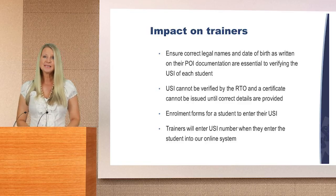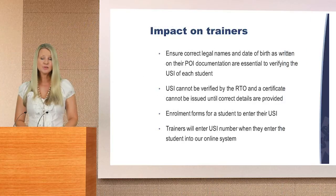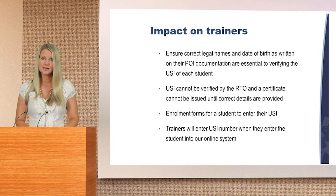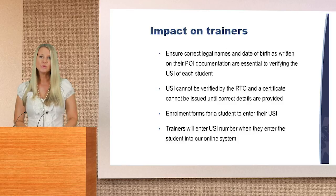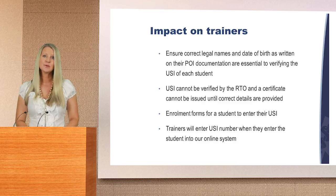The requirement to ensure correct legal names as written on their proof of identity documentation and date of birth are provided on enrolment forms will become essential to verifying the USI of each student. If any one of those fields are not completed accurately, the USI cannot be verified by the RTO and a certificate cannot be issued until the correct details are provided. There will be a field on the enrolment forms for a student to enter the USI. Trainers will then enter this USI number at the same time they enter the student into our online system, so we can complete the verification process prior to issuing the statement of attainment.